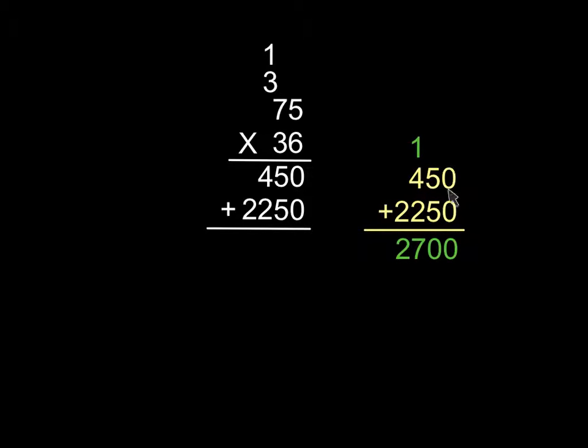So when we're adding, zero plus zero is zero. Five plus five is ten. Carry a one, just like we've always done when we've added. Write the zero down below. Four plus two is six, plus one is seven, and then two.